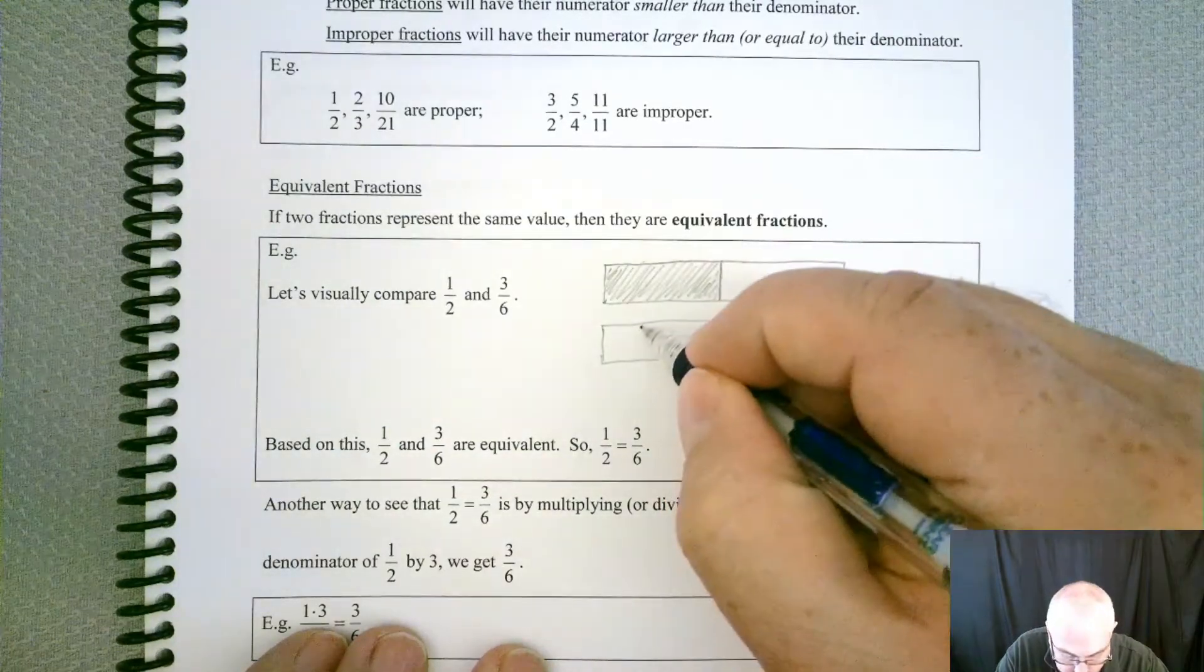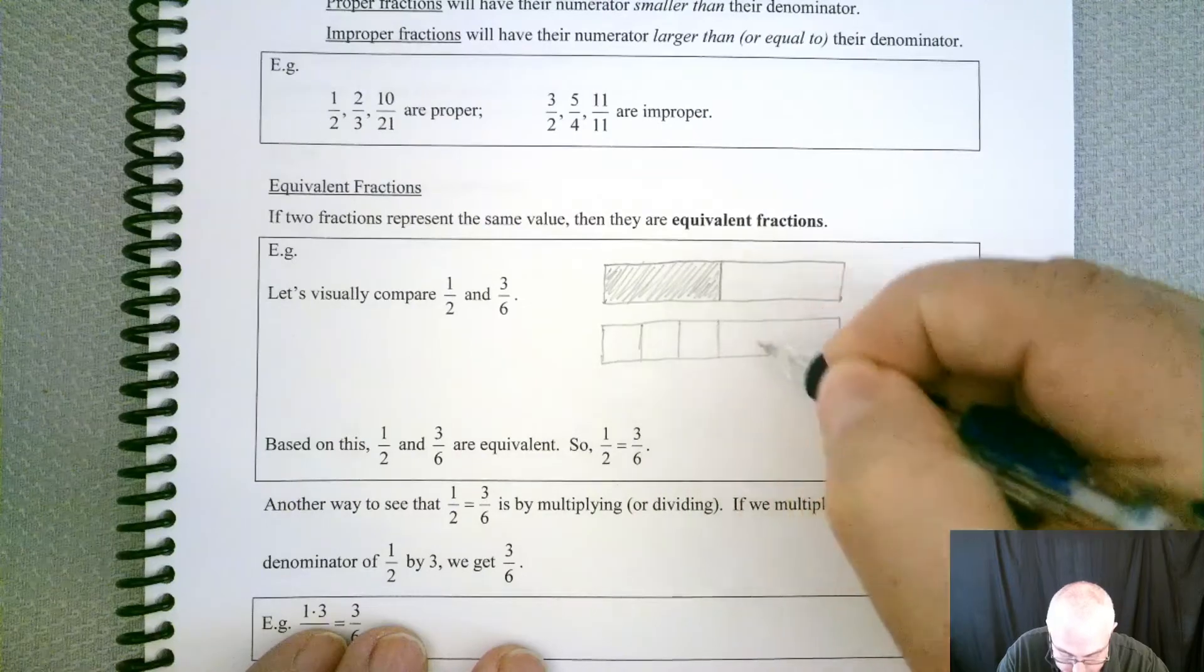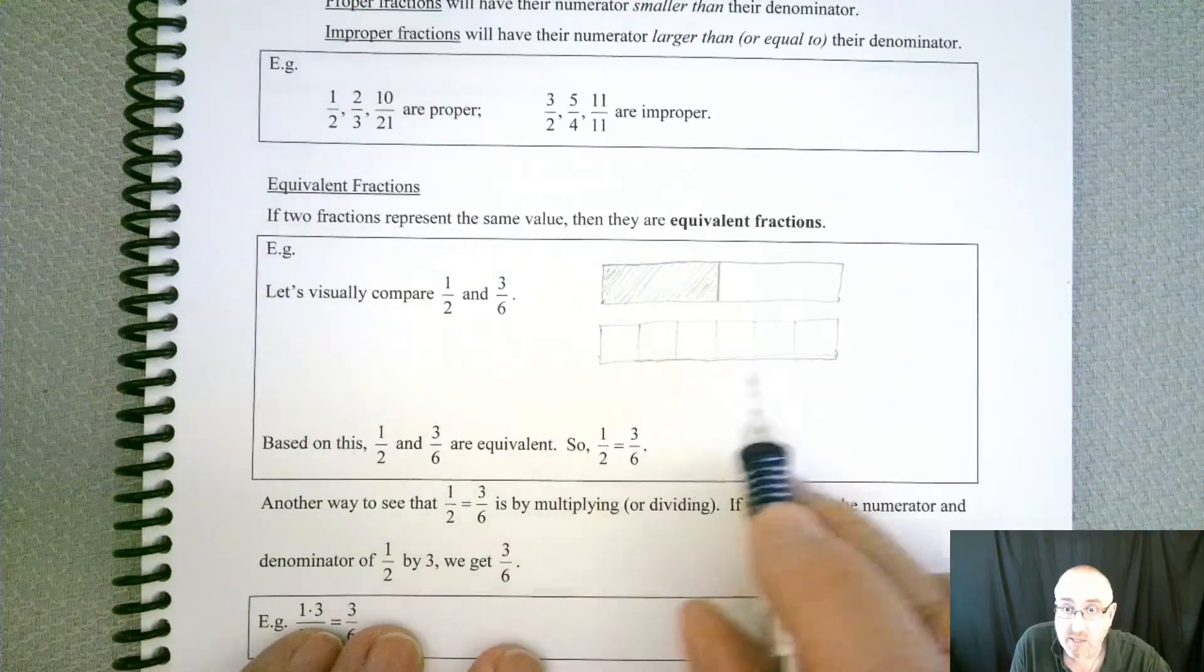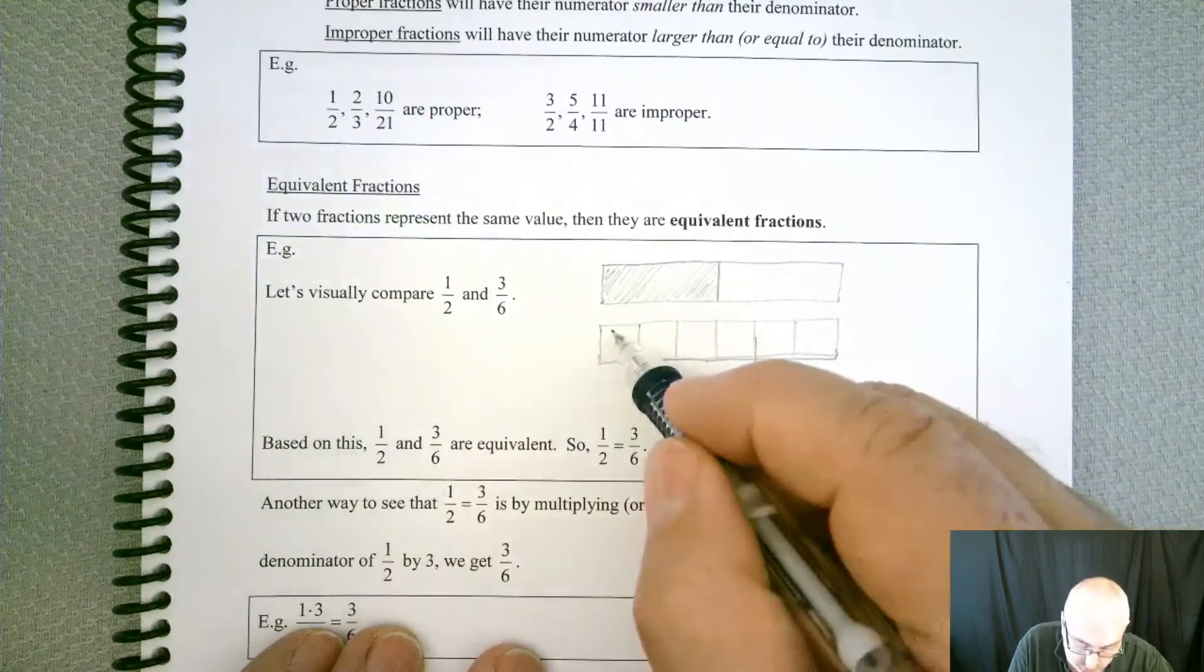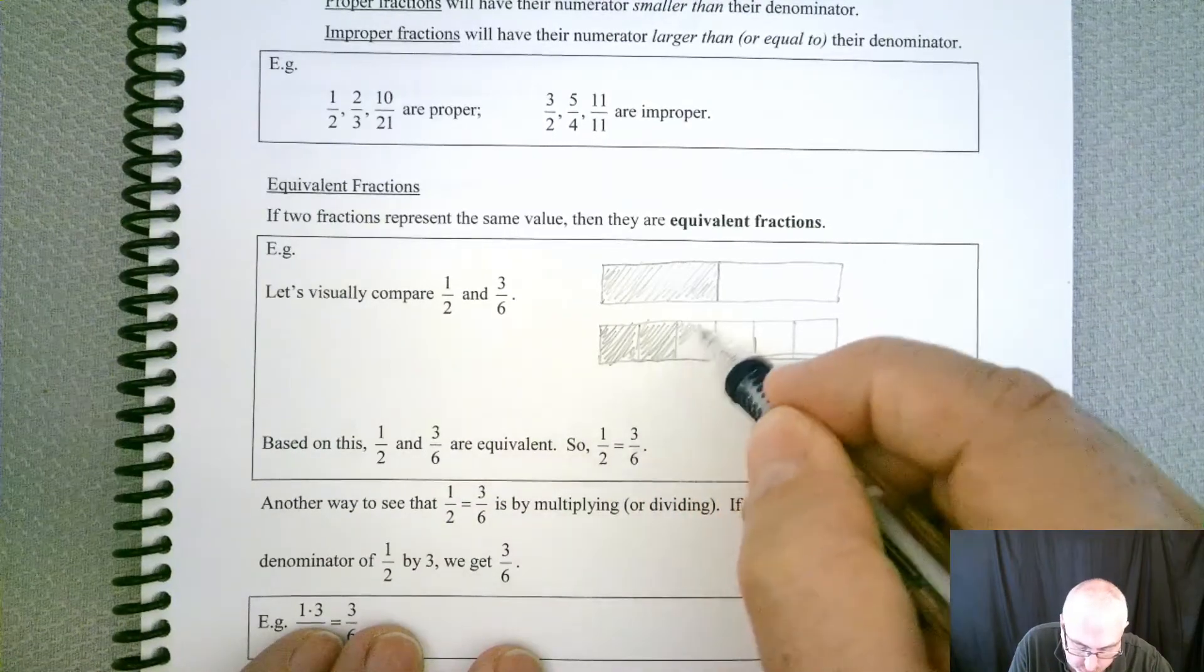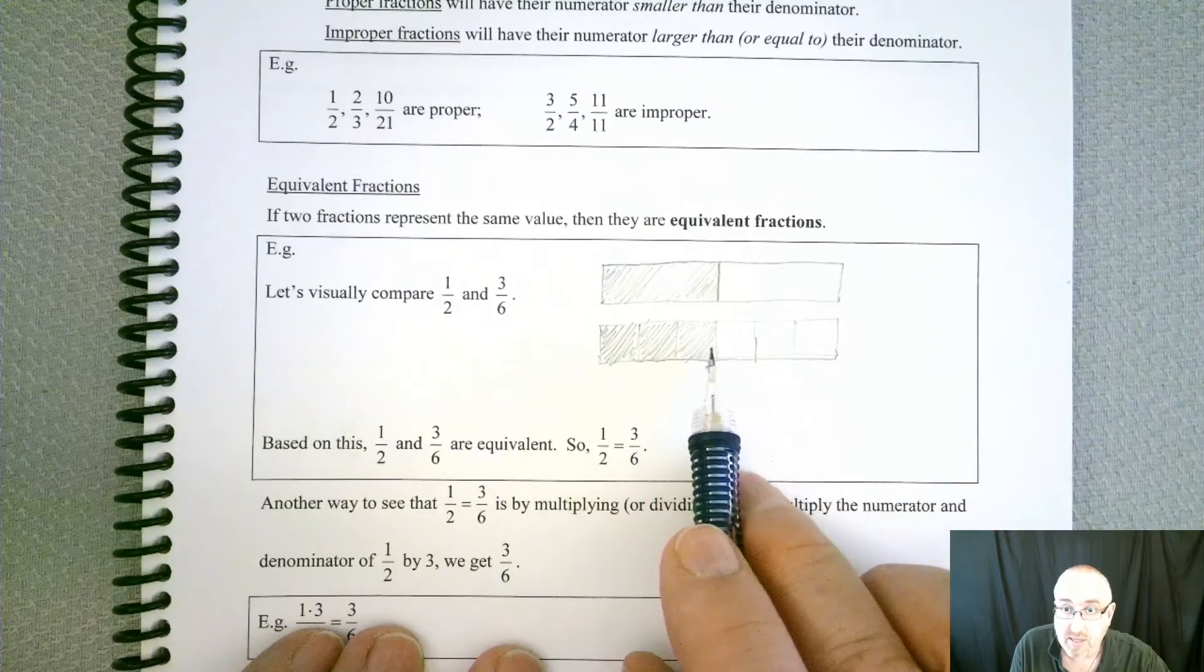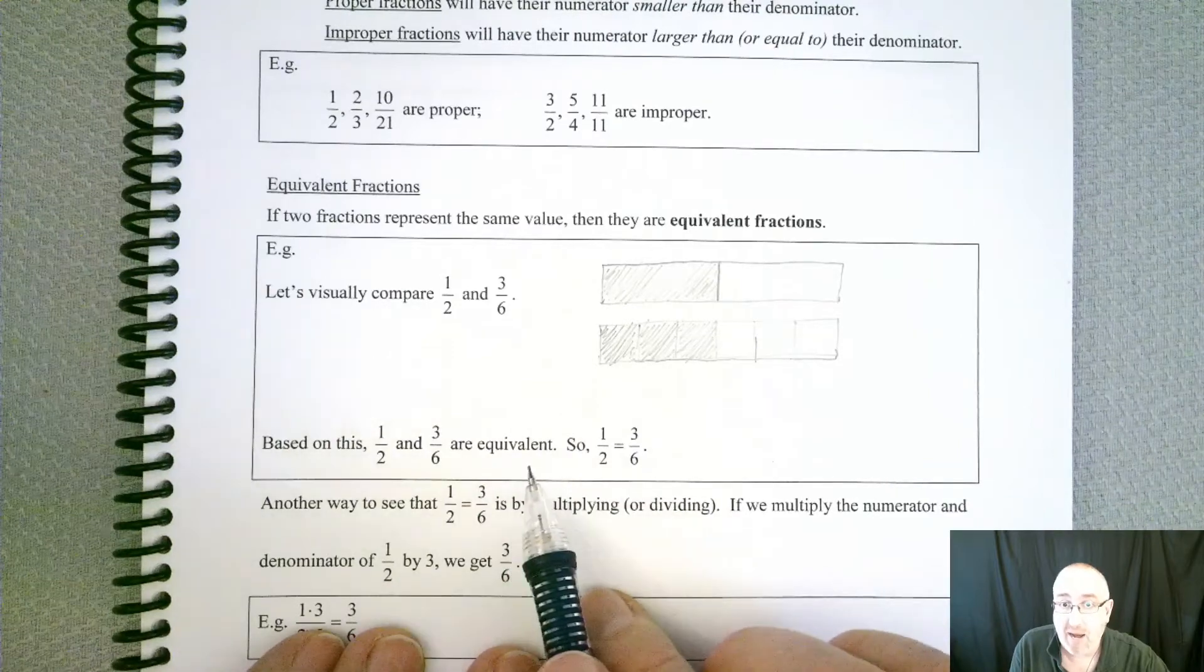These two pieces are equal in size. I've shaded one out of the two equal pieces, so there's our visual representation for 1/2. If I wanted to do something similar for 3/6, the first thing I've got to do is chop it up into six equal pieces. So we got our six pieces here, and now I want to shade three of them.